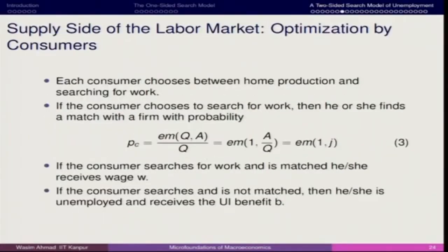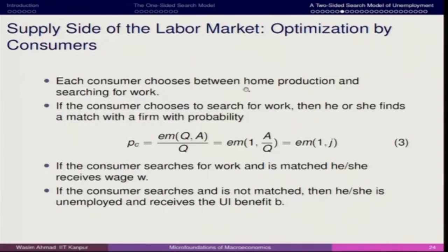Now we will talk about the supply side of the labour market — we are looking at optimization by consumers. Each consumer chooses between home production and searching for work. Home production means you are not looking for a job, you are sitting at home doing leisure activities — those which are not having immediate economic benefits. Searching for work means that if you work for a certain number of hours with fixed duration, you are going to get some reward or wage. We are not counting non-wage activities, only those activities linked with the wage.